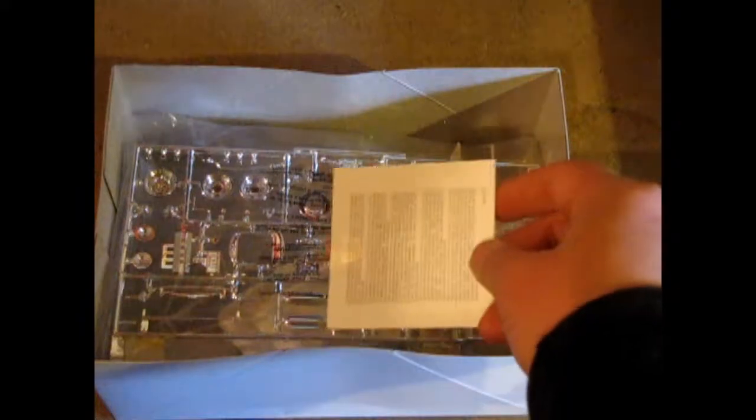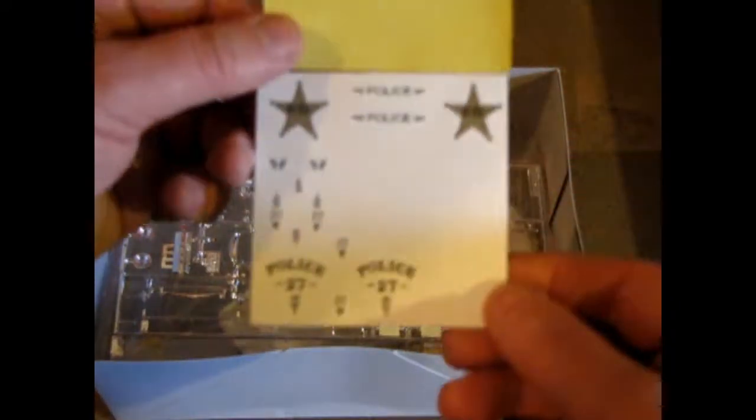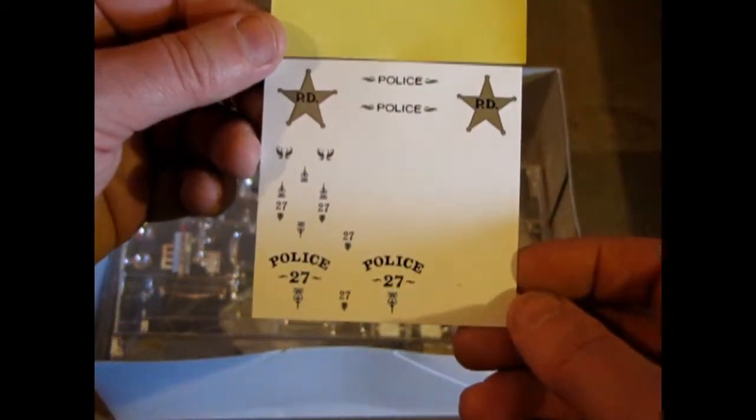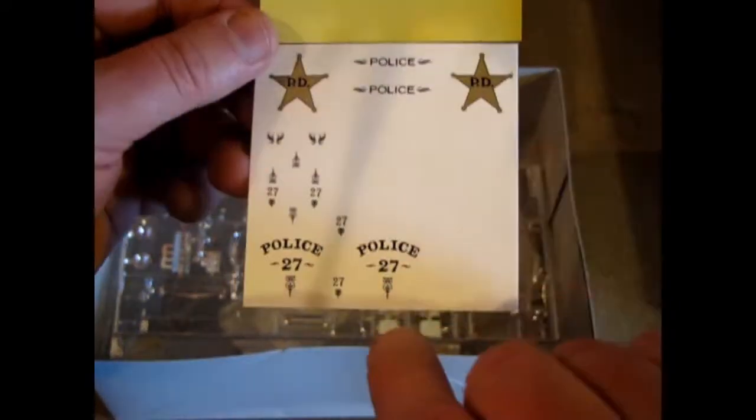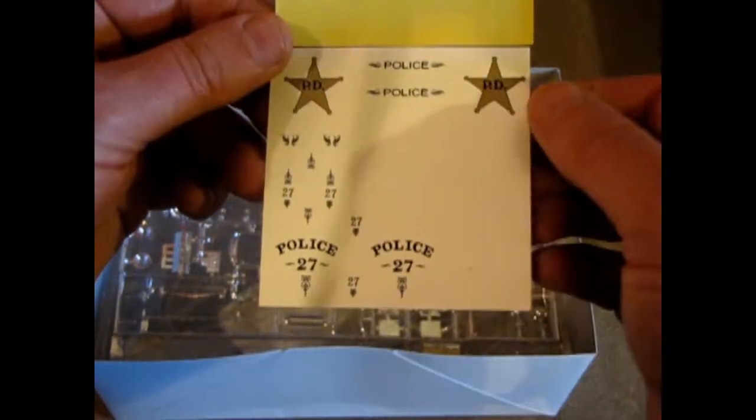Now, what's interesting about this kit. A lot of interesting things about this kit. They give you these nice police decals. They just say police and 27. And then there's white ones here too. And the star.